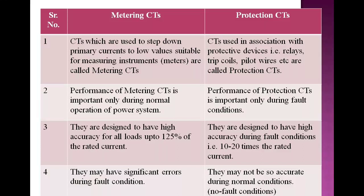Metering CTs are designed to have high accuracy for all loads up to 125% of the rated current. Protection CTs are designed to have high accuracy during fault conditions, that is, 10 to 20 times the rated current. Metering CTs may have significant errors during fault conditions, while protection CTs may not be so accurate during normal conditions.